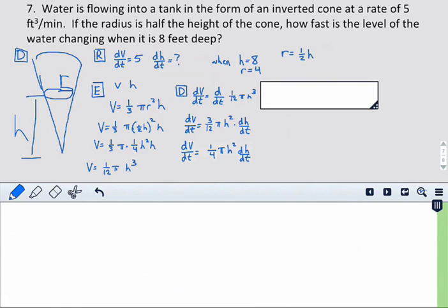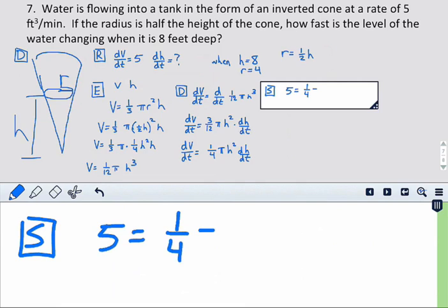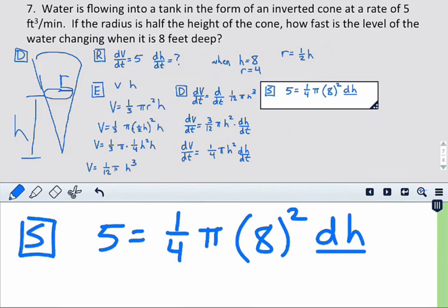Next, let's go ahead and substitute. So, we know dv dt is five, and we have one-fourth pi. And we know we want to find this when h equals eight. And what we're looking for is dh dt.